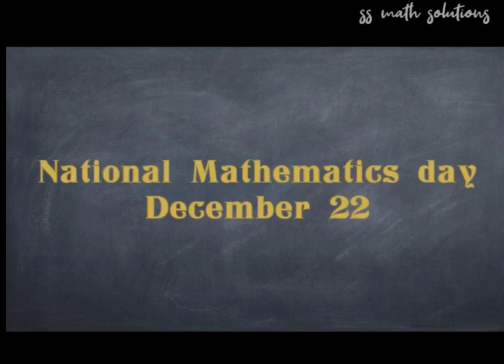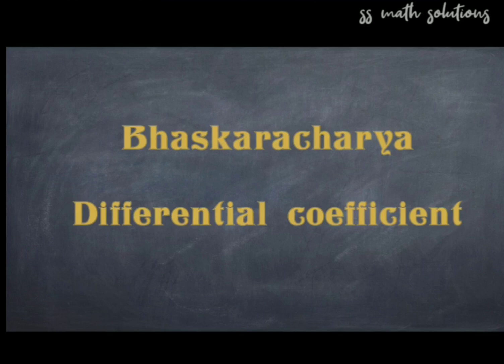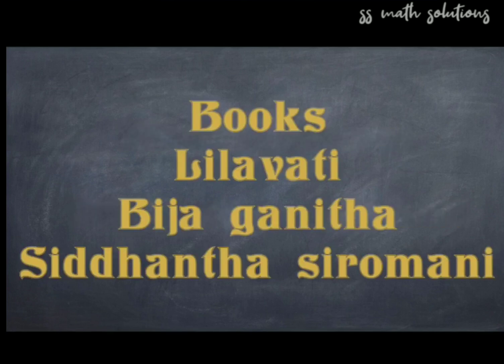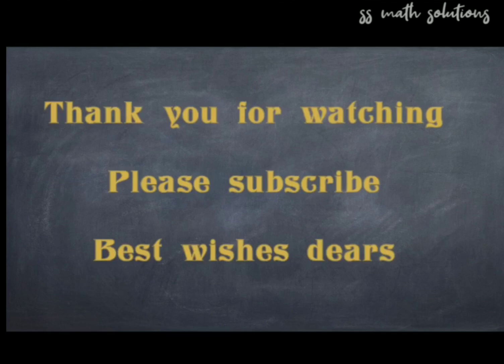National Mathematics Day is celebrated on December 22nd in memory of Srinivasa Ramanujan. Bhaskaracharya was the first mathematician who presented examples related to differential coefficient. His famous books are: Lilavati (on mathematics), Bijaganita (on algebra), and Siddhanta Shiromani (in two parts — mathematical astronomy and the sphere). Thank you for watching; please subscribe for future videos.